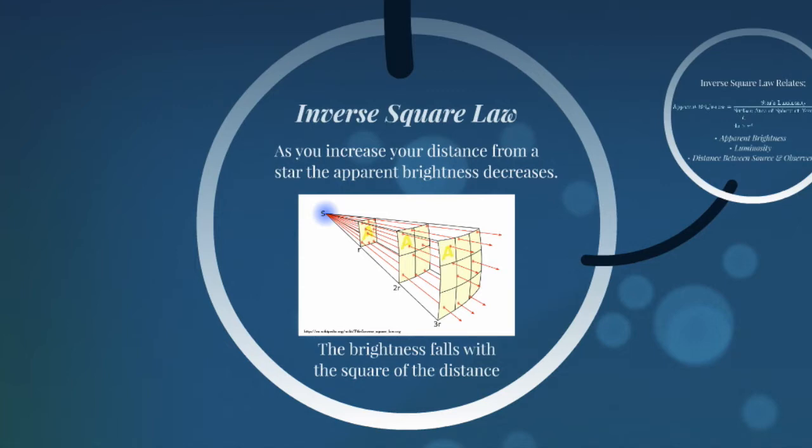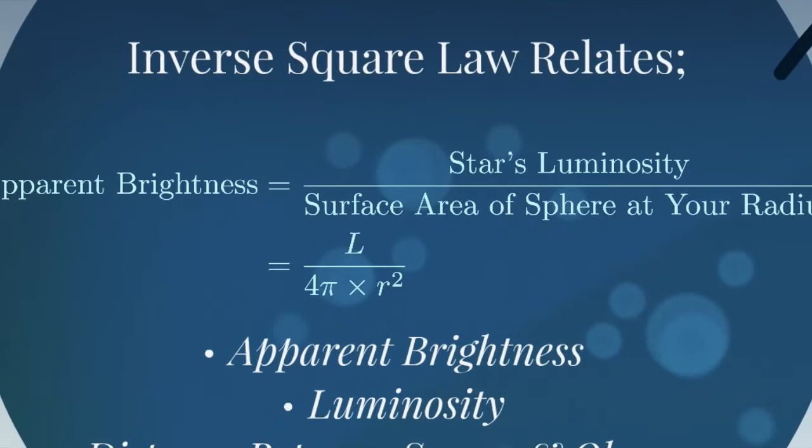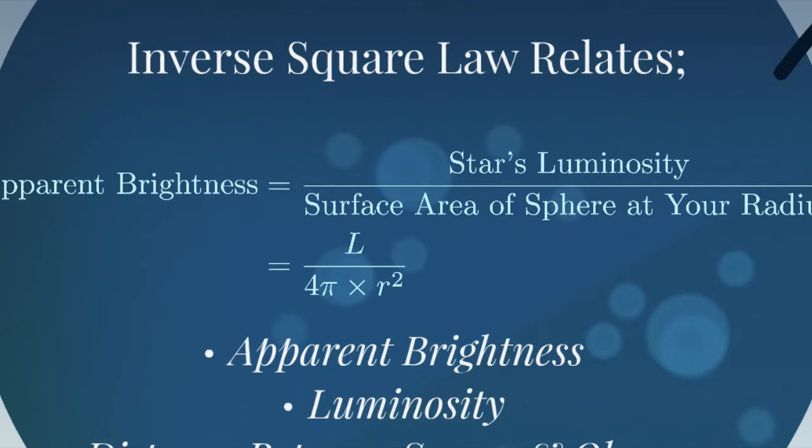And there's a simple relationship that relates the distance away to that brightness. And it's called the inverse square law. So the inverse square law says that the amount of light I see, the apparent brightness, is related to the luminosity and the distance between the source and the observer.